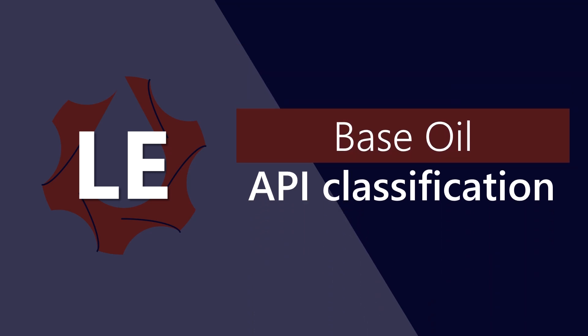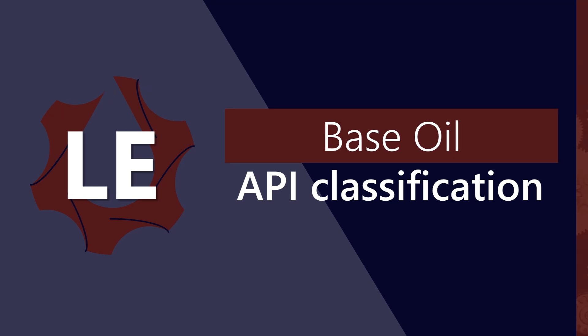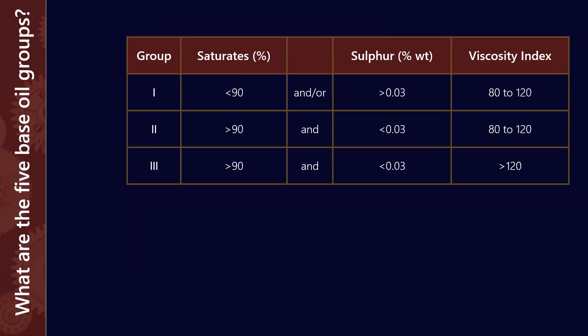So you've probably heard people talk about group 1, group 2, group 3 base oils. We're going to discuss what they are and what that means for you. The ones that you're probably most familiar with are these three groups - group 1, group 2, and group 3, the mineral oils. What distinguishes the mineral oils is their saturate content, sulfur content, and their viscosity index. So what does that actually mean for the different groups?